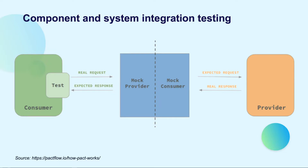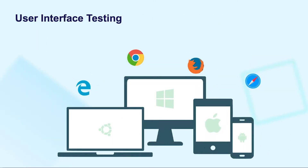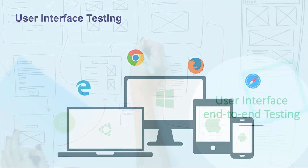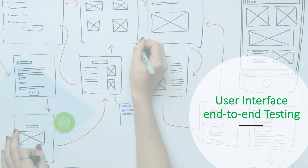Coming to the next level, it's time for user interface testing, often called UI testing. With web interfaces, UI testing can achieve two objectives. First, it ensures that your application's presentation layer works well across multiple browsers such as Chrome and Microsoft Edge, various devices such as PCs, tablets, and mobile devices with different screen sizes, or different platforms such as iOS and Android. The second objective is UI end-to-end testing, which mainly aims to verify the business processes and workflows of the application under test.